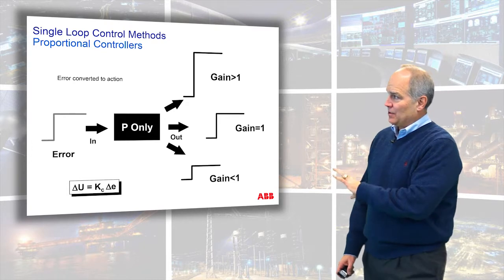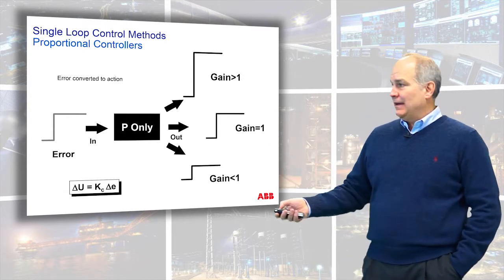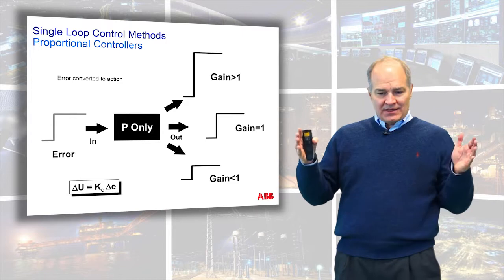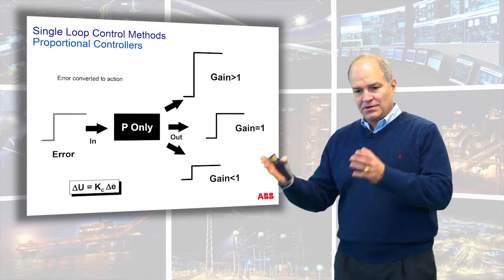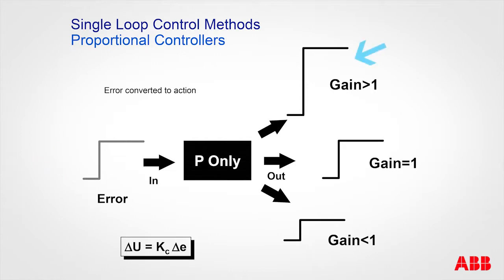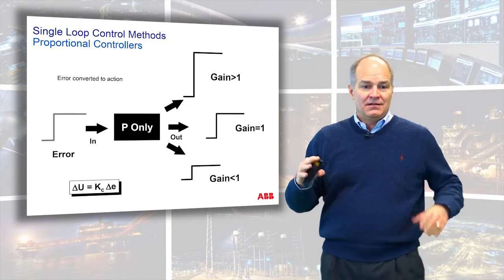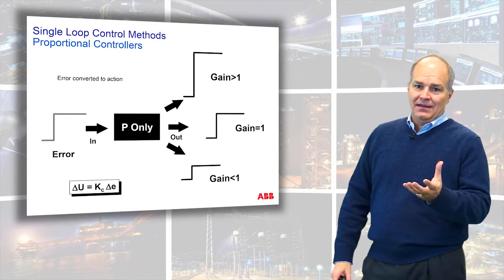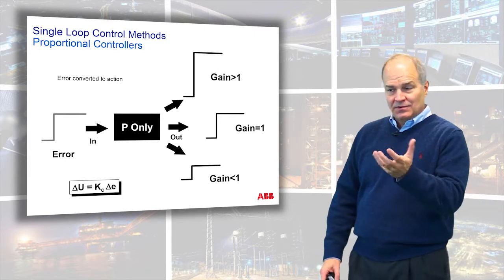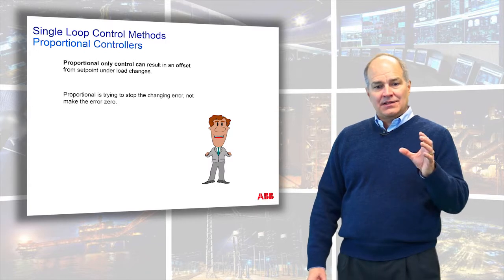To summarize proportional: the output is proportional to the shape of the error. For a step-change error, if gain is greater than one the output is bigger; if gain equals one they're matched; if gain is less than one the output is less. The gain adjusts the proportion, and you need to bias the gain with the process gain — we'll cover that in tuning rules. However, proportional-only control results in what's called an offset.